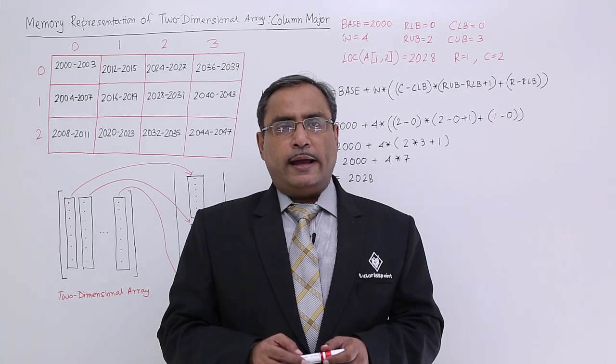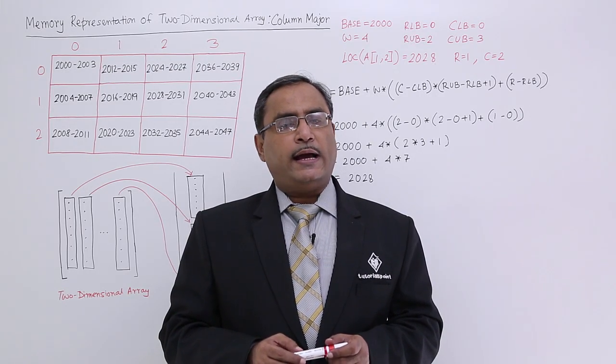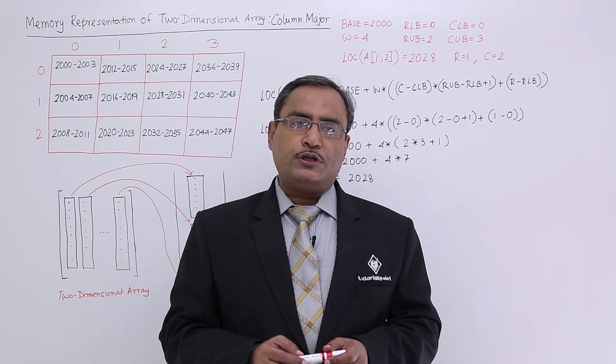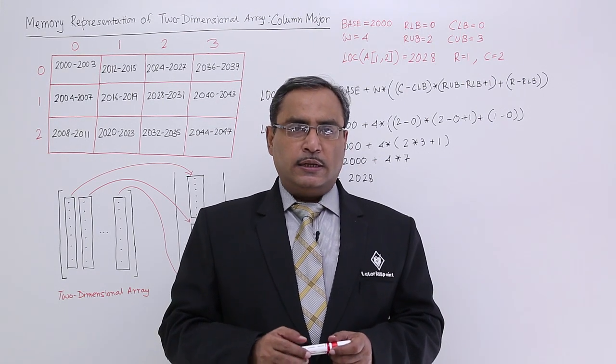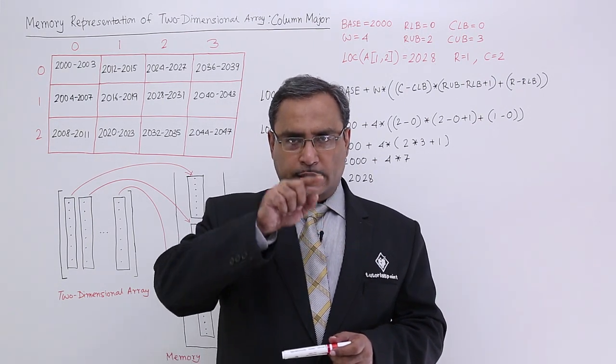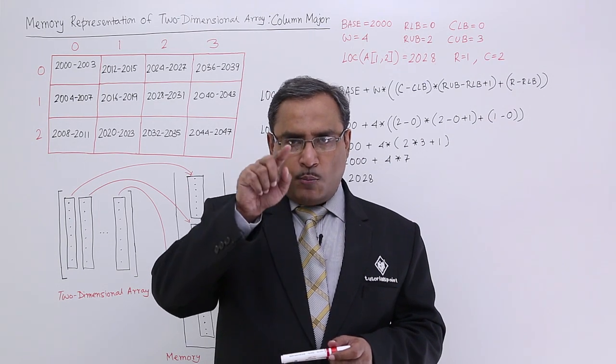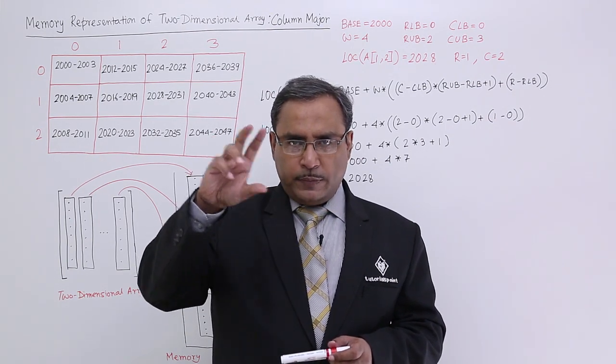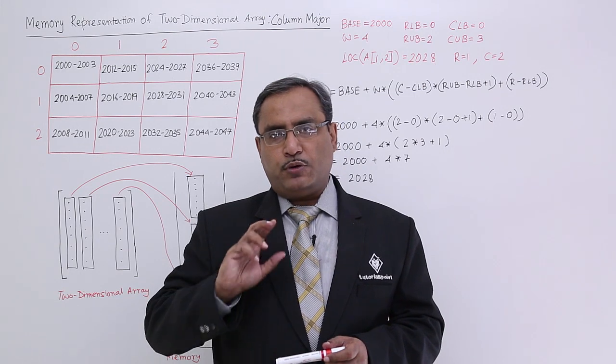One two-dimensional array can also be represented in column major order inside the computer's memory. That means the data will be read in the two-dimensional array column-wise and accordingly they will be kept in the computer's memory.